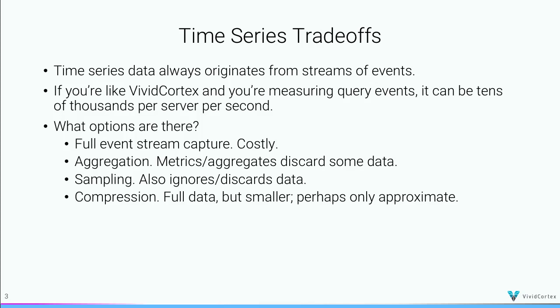Another option is to aggregate these events into metrics, or use sampling, which ignores and discards data. Both are basically proxies for some kind of compression. Usually when we think of compression, we're thinking of something like zip that takes the original data and you can reconstitute it later. VividCortex compresses things in a way that you can't quite get the original data back, but you get something very, very close to it — and by doing that, we save a lot of costs.